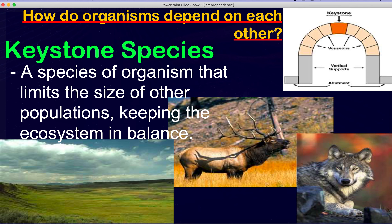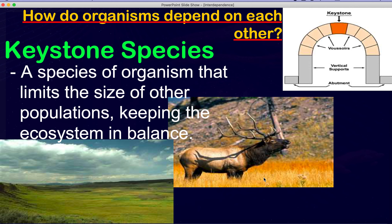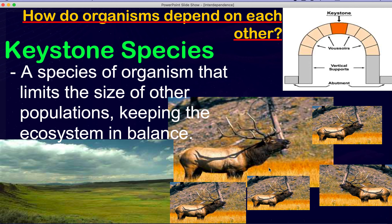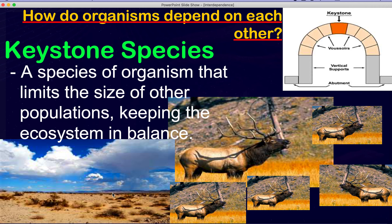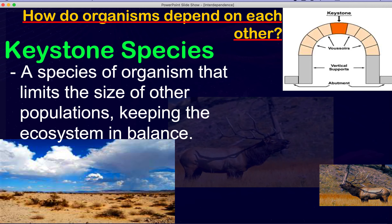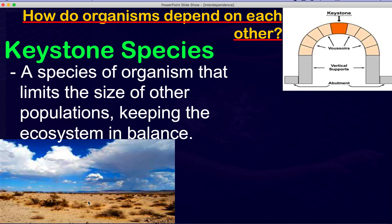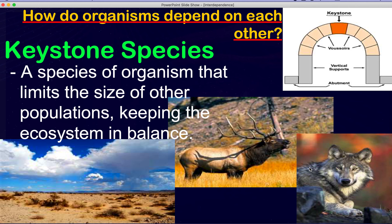If you take away the wolf, the elk population gets out of control. When the elk population gets out of control, it eats all the grass and the grassland becomes barren. Once the land is barren, the elk population will also disappear. That's why the keystone species of the wolf is extremely important to this ecosystem.